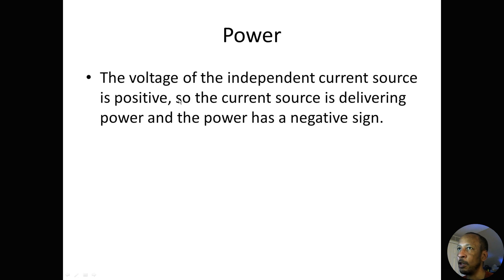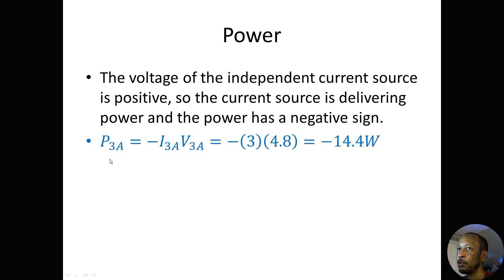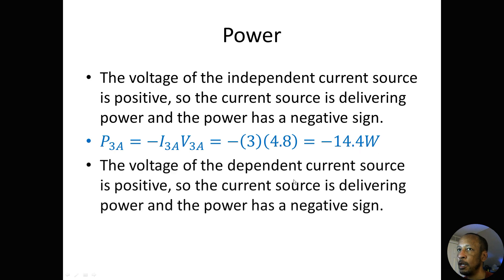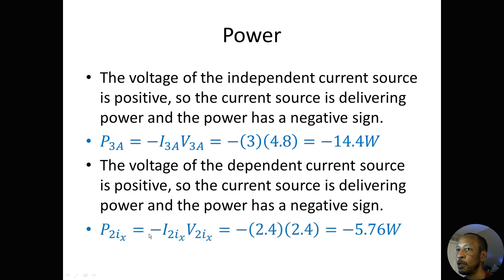For power: the voltage of the independent current source is positive, so the current source is delivering power and the power has a negative sign. P3A equals negative I3A times V3A, which equals negative 3 times 4.8, which equals negative 14.4 watts. The voltage of the dependent current source is also positive, so P2IX equals negative I2IX times V2IX, which equals negative 2.4 times 2.4, which equals negative 5.76 watts.